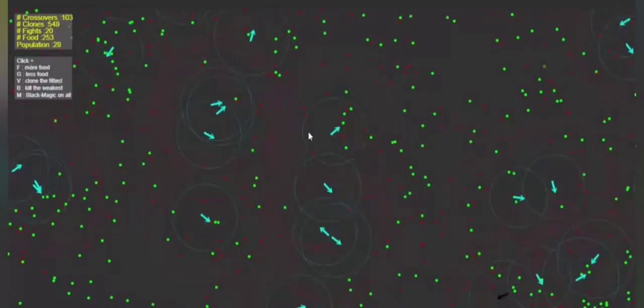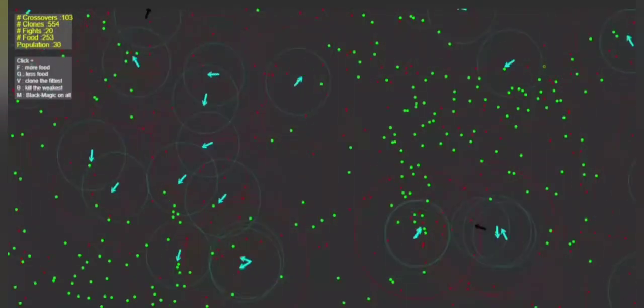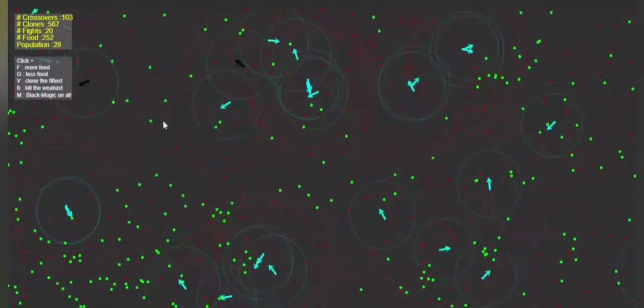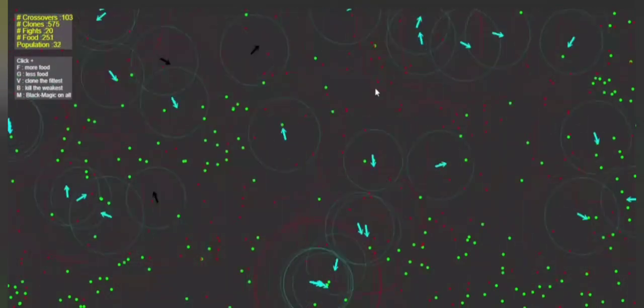This is a project I built from scratch in my sophomore year. As you may have already noticed, these are simulated beings trying to go for the green dots, which represent food, and are avoiding the red dots, which are poison.